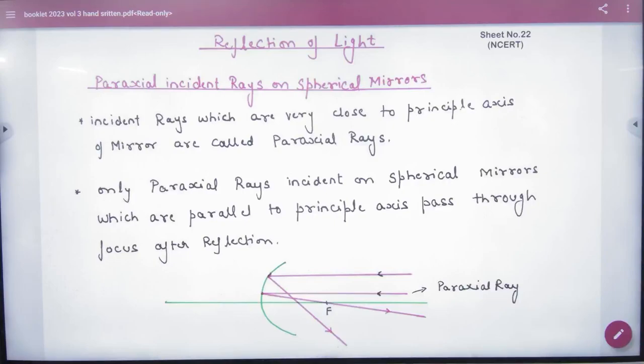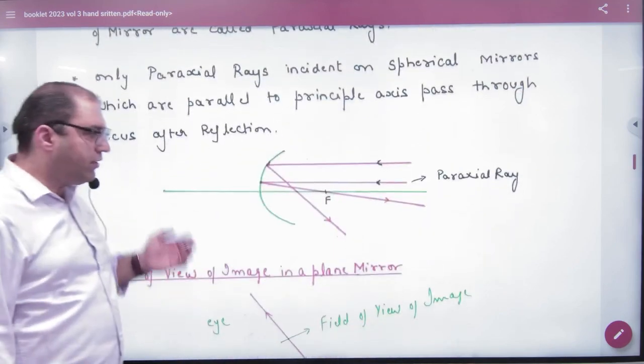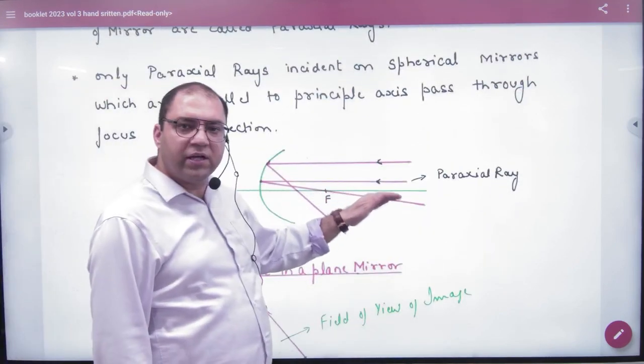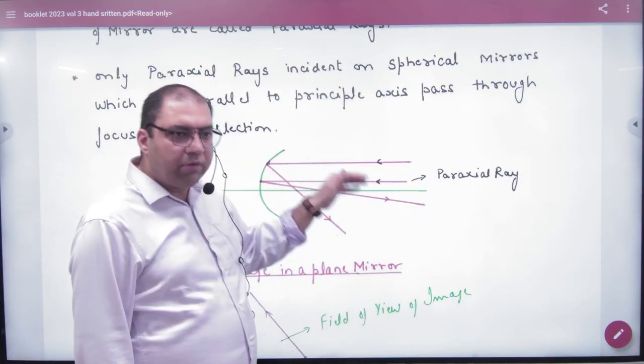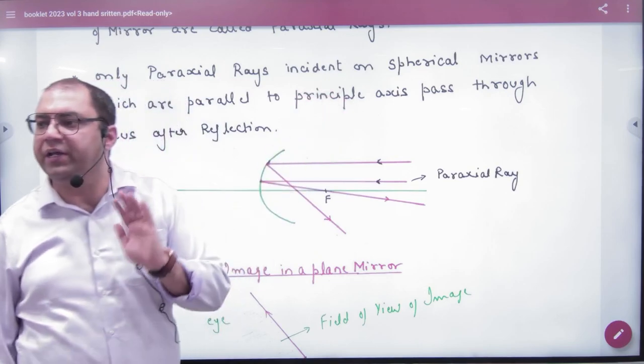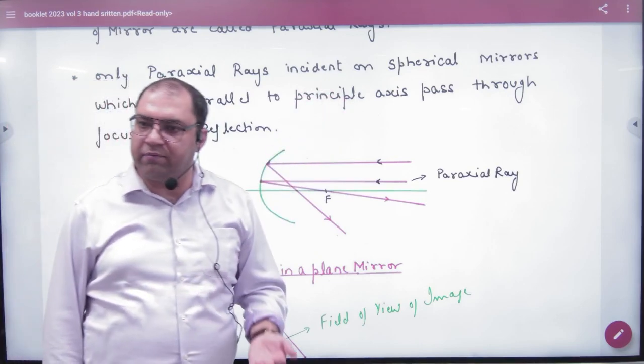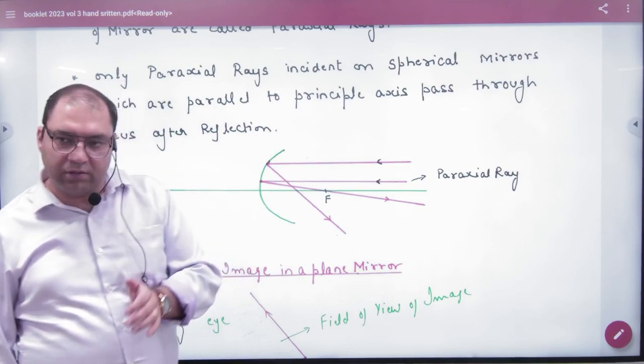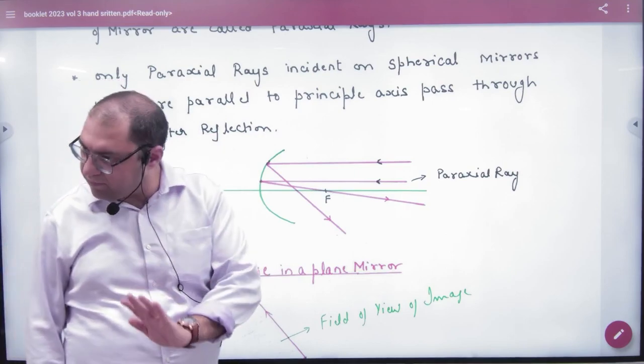In reflection of light, rule number 1, we study the rays. They are paraxial rays. Paraxial rays are rays that are very close to the principal axis. We don't study the rays very far. The rays are paraxial. Point number 1.